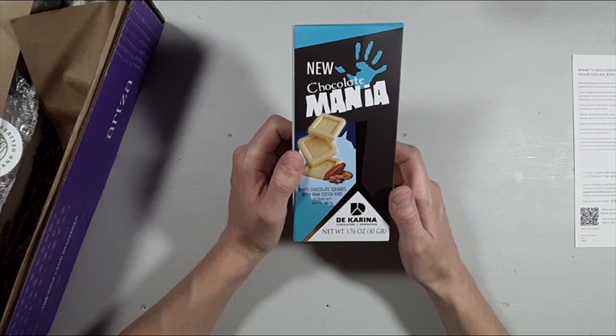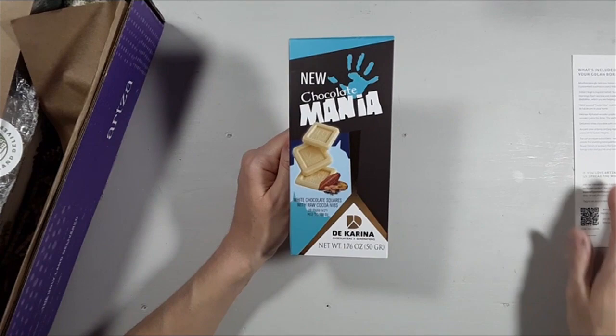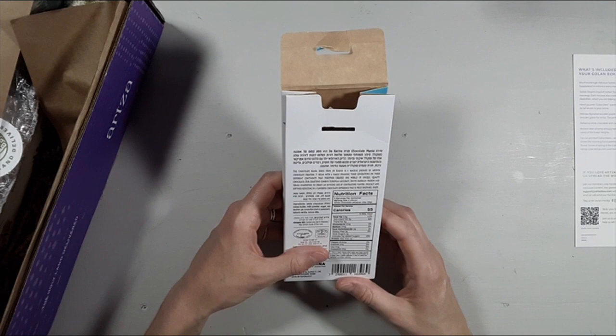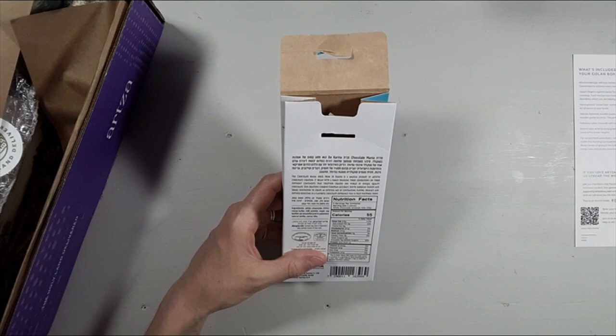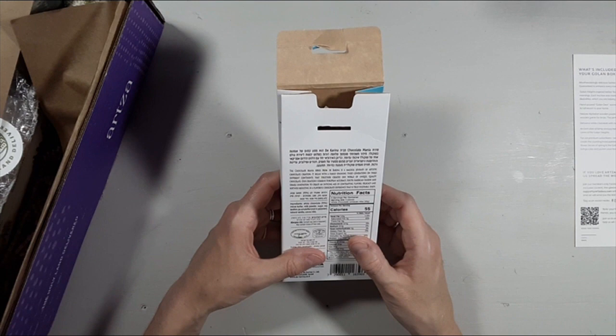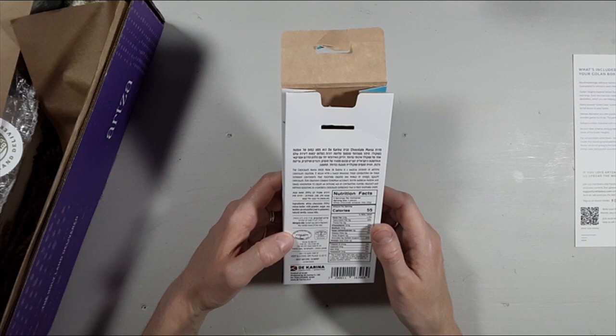This is New Chocolate Mania. This says Decarina Chocolatiers, three generations white chocolate squares with raka cacao nibs. That is very nice packaging. It looks and sounds wonderful, and we are about to find out what it tastes like. This says truly enjoyable, enjoy.